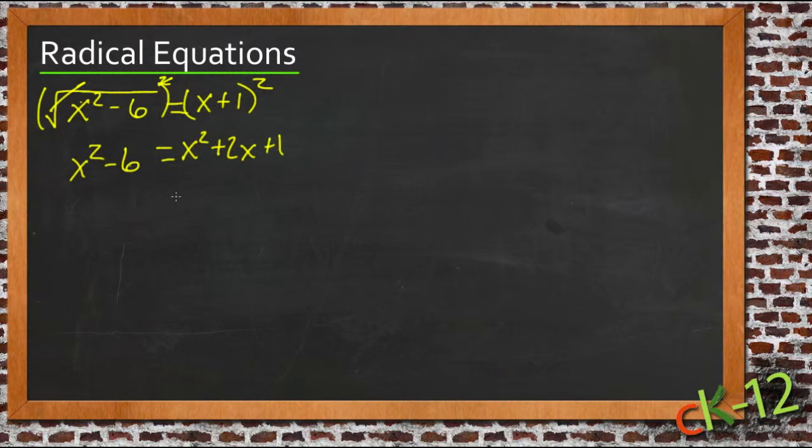Now we can subtract x squared from both sides, and that will cancel, and we'll have negative 6 equals 2x plus 1.